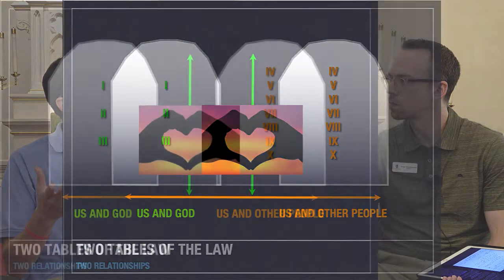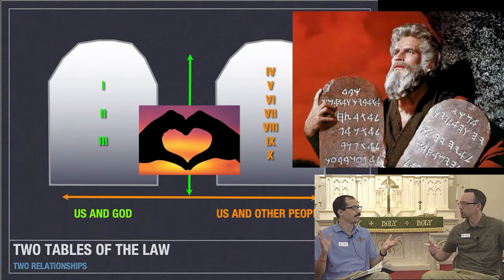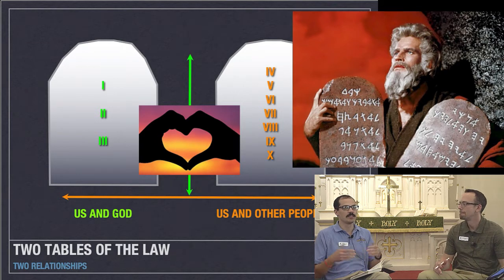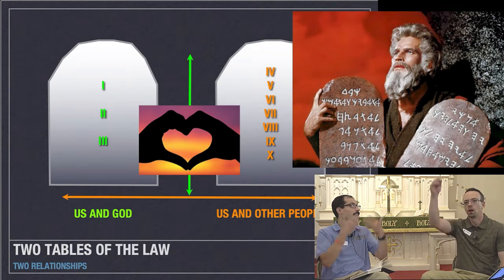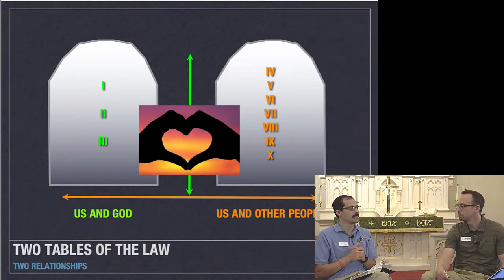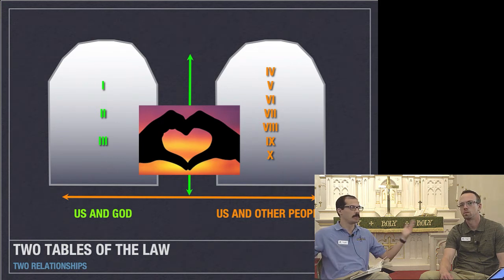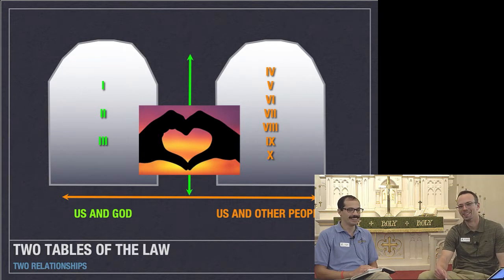We can divide the commandments into two sections, called the two tables of the law. Moses got two tables — two slabs of stone. The first table covers commandments one through three, and they primarily concern our relationship between us and God — vertical. The second table of the law, commandments four through ten, deal with our relationships with other people — a horizontal relationship.